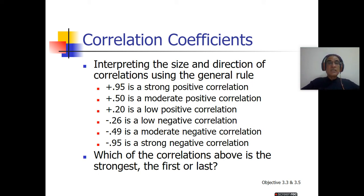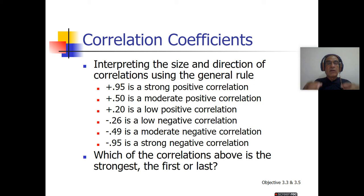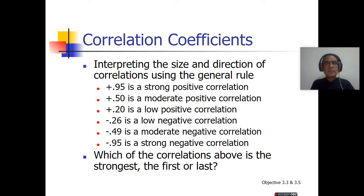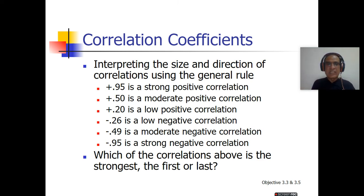Correlations use general rules. Plus 0.98 is a strong positive correlation between any two variables. Plus 0.5 is a moderate positive correlation. Plus 0.2 is a low positive correlation. Minus 0.6 is a low negative correlation. Minus 0.42 is a moderate negative correlation. Minus 0.95 is a strong negative correlation. Now, a question for you: which of these correlations is the strongest? Please think about the answer — it will be asked at the end of this lecture.